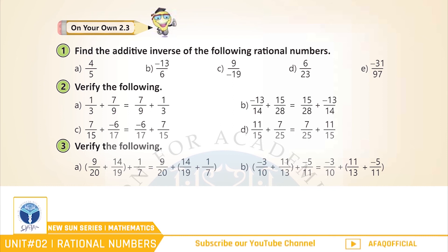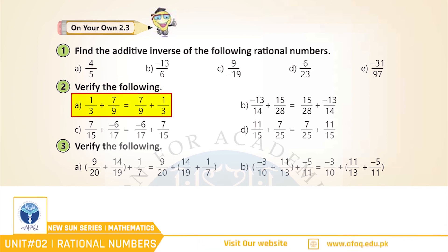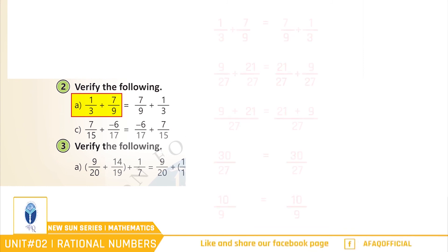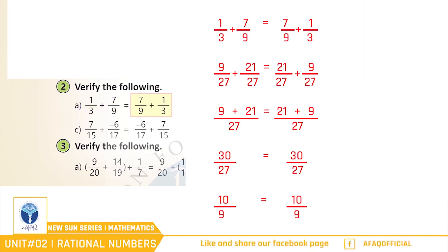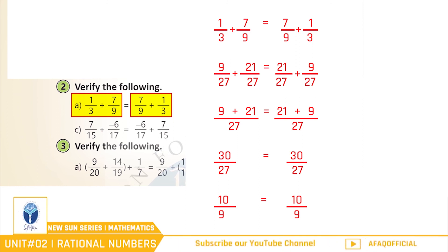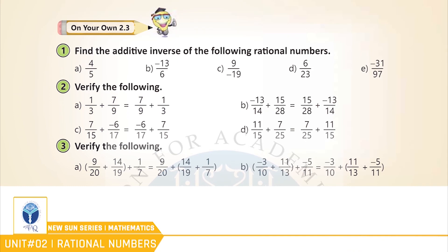Question 2: Verify the following. (a) 1/3 + 7/9 = 7/9 + 1/3. تو بچو left hand side کا sum ہے 10/9 اور اسی طریقے سے right hand side کا sum بھی 10/9 ہے۔ تو اس سے ثابت ہوا کہ left hand side برابر ہے right hand side کے، یعنی یہاں پر commutative law verify ہوتا ہے۔ بچو اگلے parts آپ نے خود حل کرنے ہیں۔